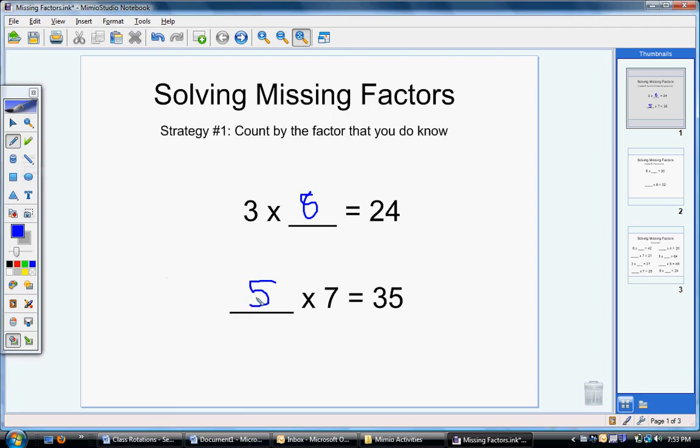I could check it then by counting by five and see if I get up to thirty-five. Five, ten, fifteen, twenty, twenty-five, thirty, thirty-five. Sure enough, if I have seven fives, I get up to thirty-five. So your first strategy is to count by the factor that you do know, counting by threes in this case, or counting by sevens.